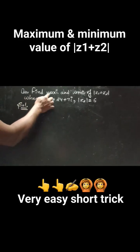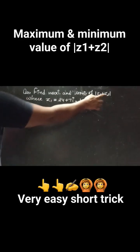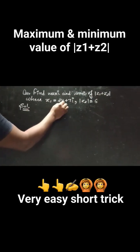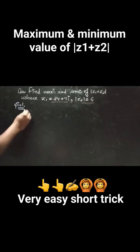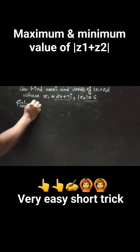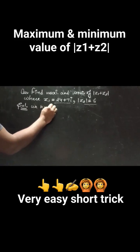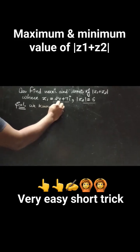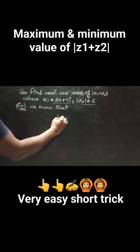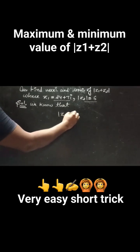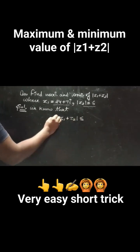Find the maximum and minimum value of modulus of z₁ plus z₂, where modulus of z₁ is given and modulus of z₂ is given. The situation remains the same if z₂ is given — we know that modulus of z₁ plus z₂ always lies between certain bounds.